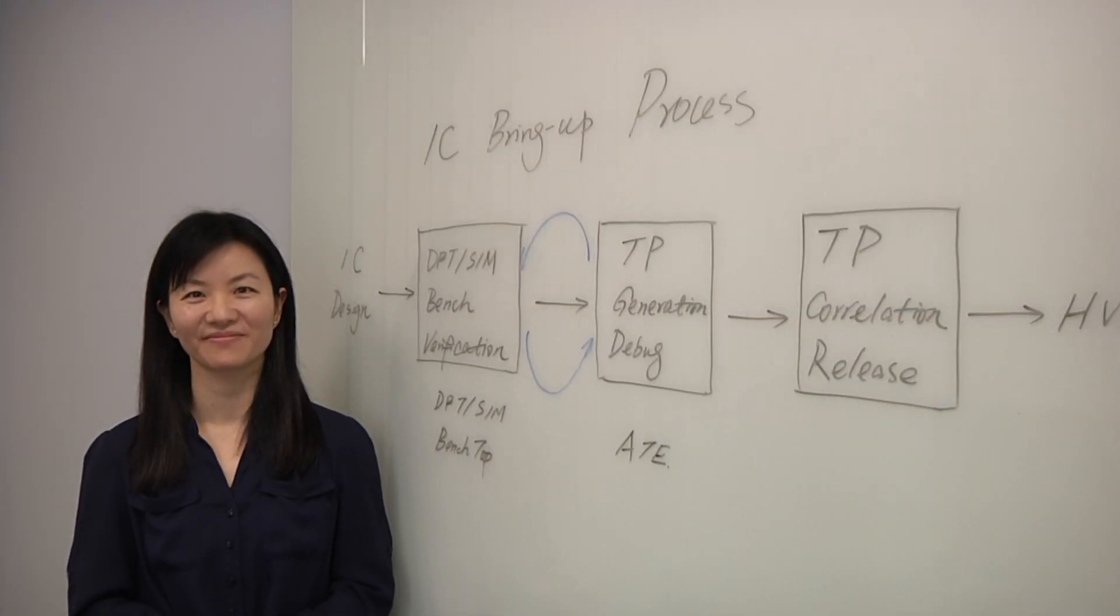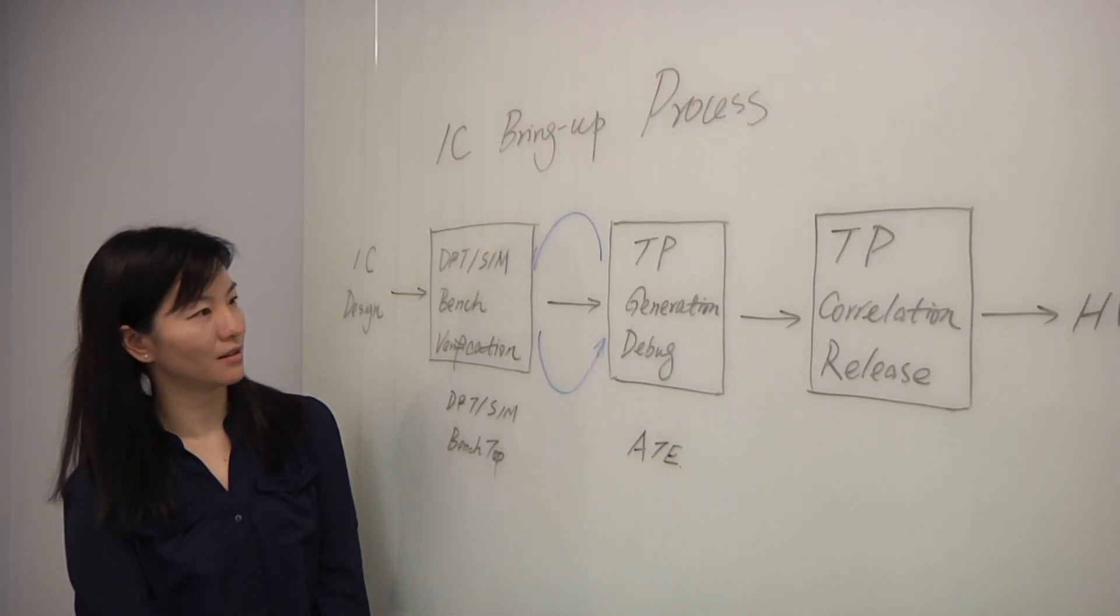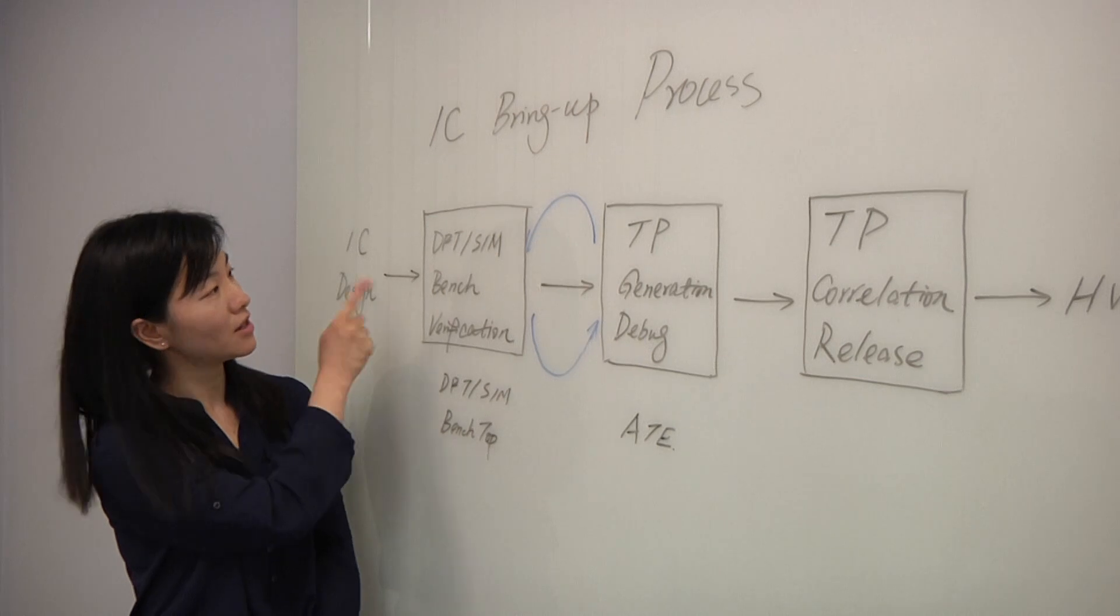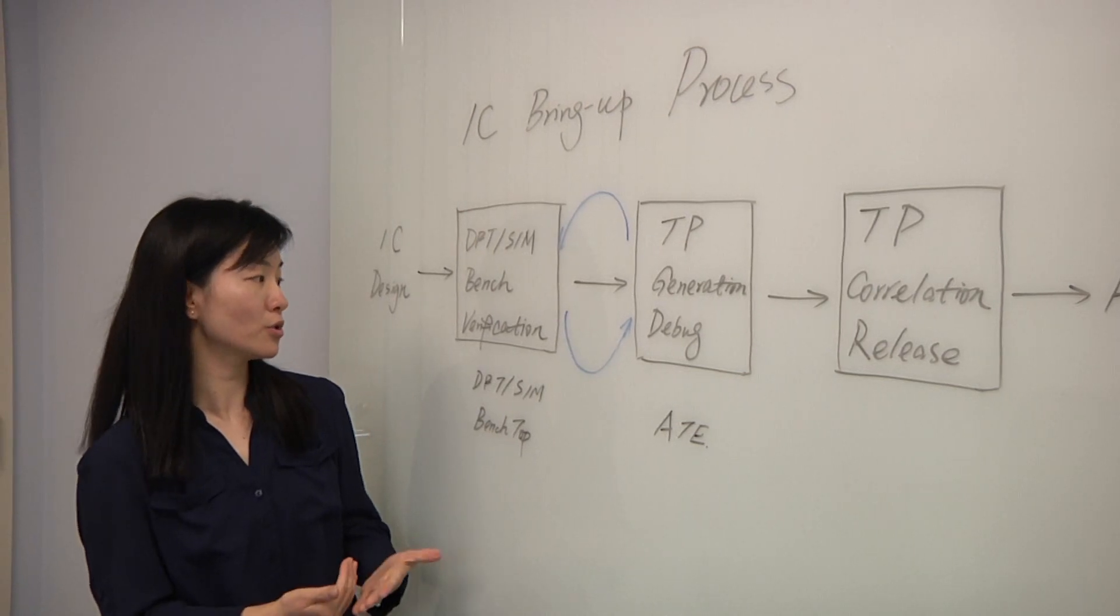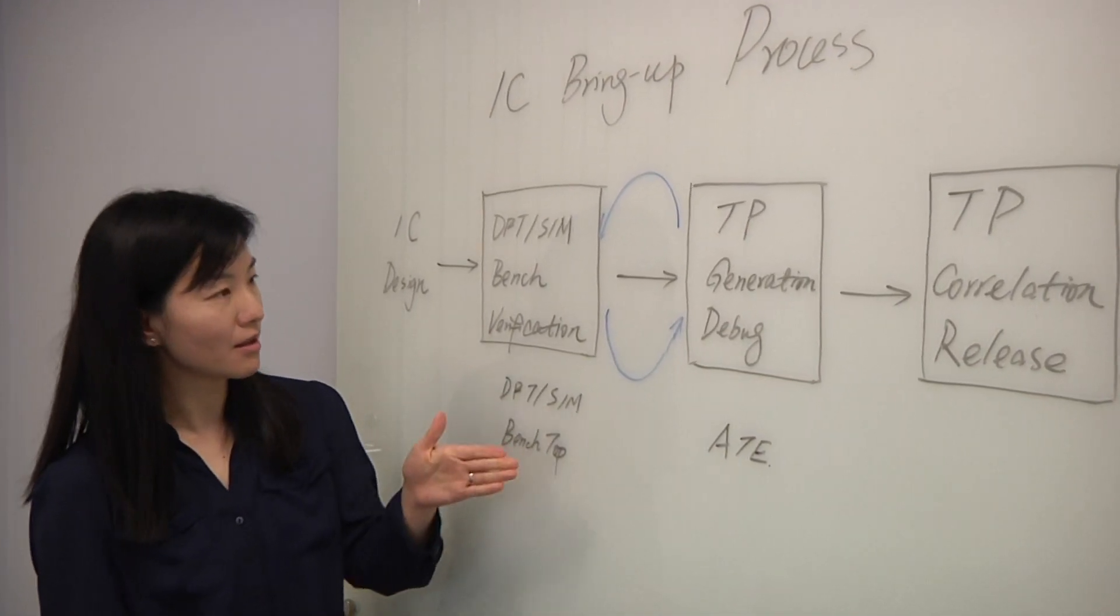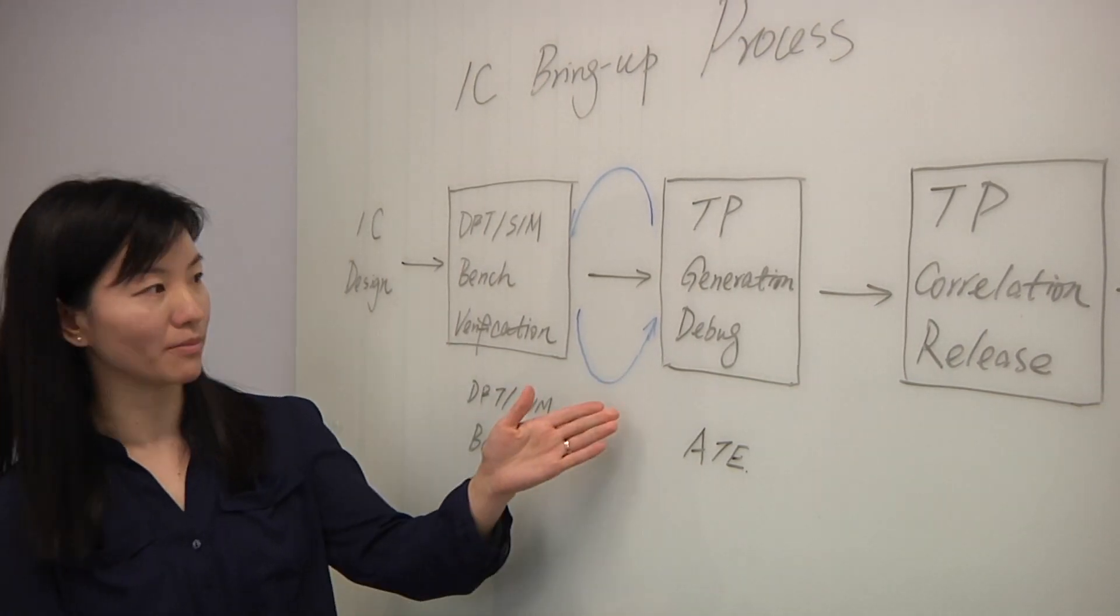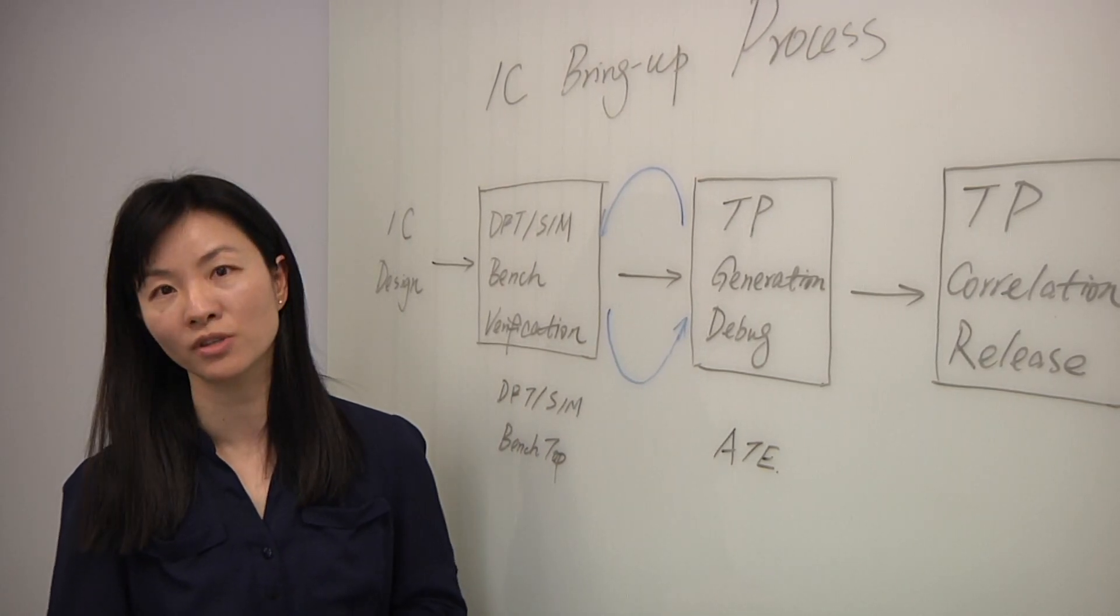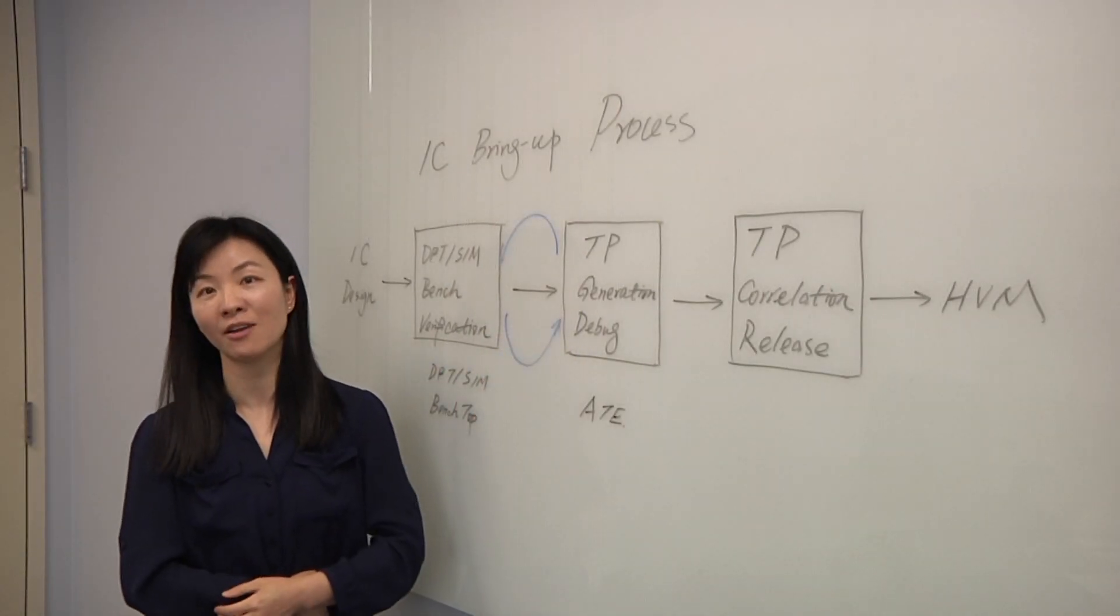Why don't you draw this out for us? Yes, sure. What are we looking at here? Here we are looking at a very typical IC bring-up process. There are normally five steps for this process, typically. From the IC design, then to the DFT simulation to do the simulation or replication and bench verification. And then test engineers need to develop a test program to generate a test program and do the debugging of the test program. And after that, to do the test program correlation and release test program to the production. The latest step is the high-volume manufacturing.